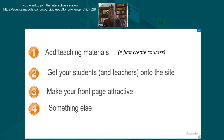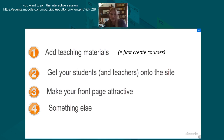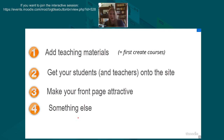The answer to the self-enrollment question is to click number three — the cog or gear icon — then enrollment methods, then self-enrollment. So we've made a course, we know how to get students into the site and into the course. The only thing left is to think about how to make the front page and the site as a whole more attractive.